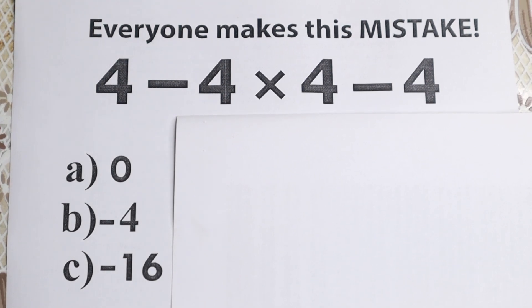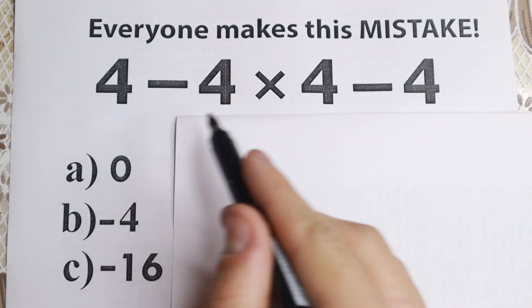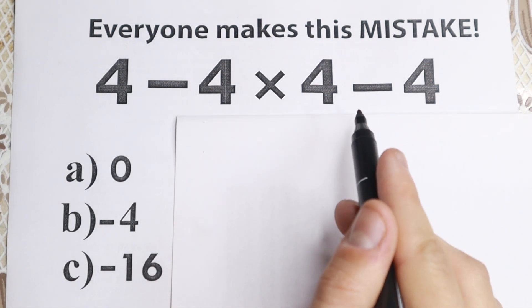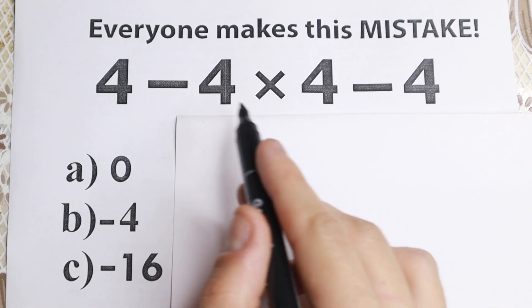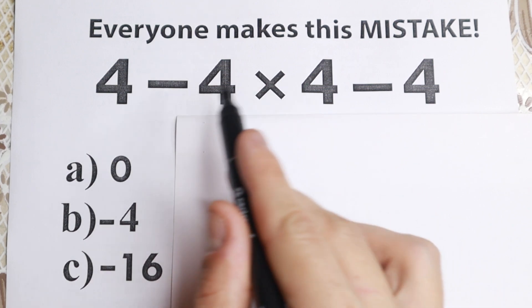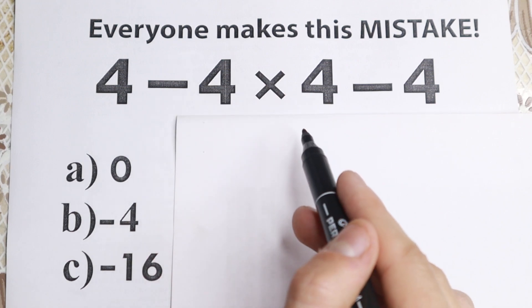Hello everyone! In this video we are going to do a very simple math problem, and you're going to be surprised that many of you are actually going to get this wrong. So here is the problem: we have 4-4 times 4-4, and I want you to use your calculator, because at first glance this simple problem doesn't have any parentheses or exponents, we have only subtraction and multiplication.